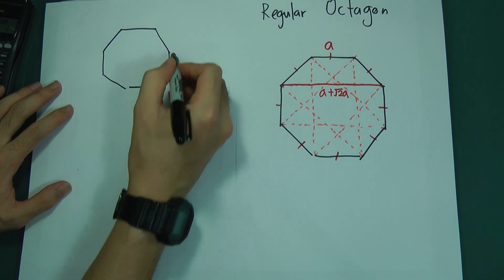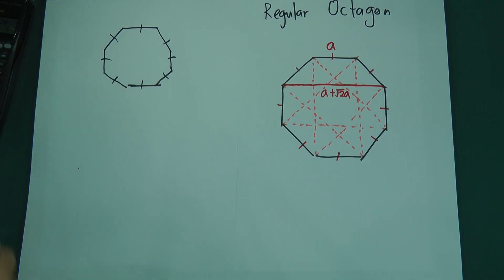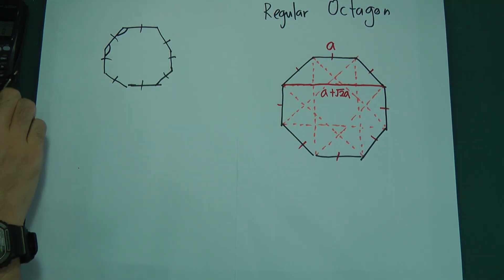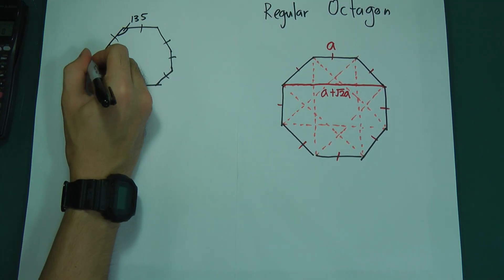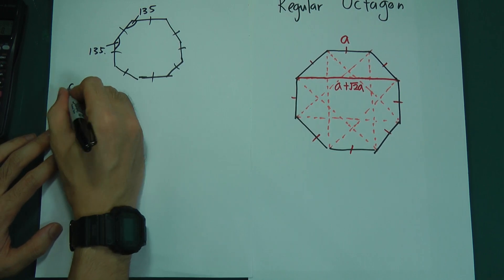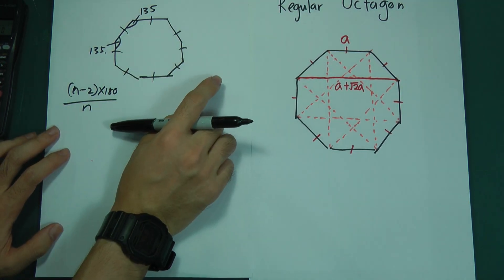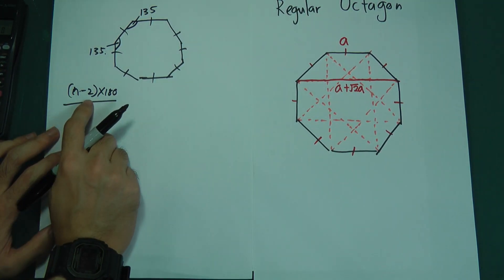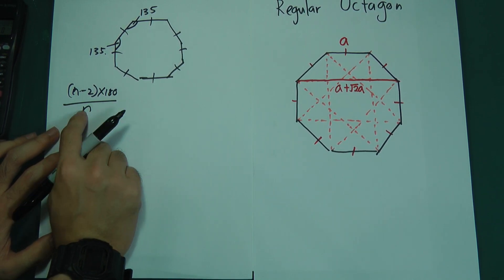Let's say this is a regular octagon. We quickly calculate their angles. After you calculate, you will know each angle is equal to 135 degrees. You just remember the formula: (N minus 2) multiplied by 180, divided by N. For a regular octagon, we've got 8 sides. So 8 minus 2 gives 6, multiply by 180 to get 1080, divided by 8. You get 135 for each angle.